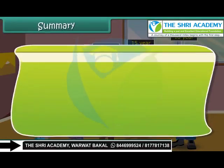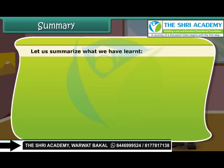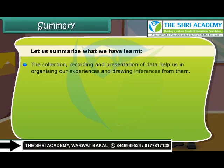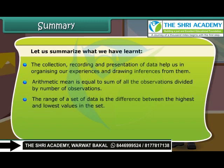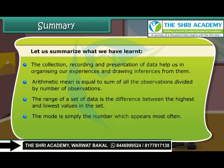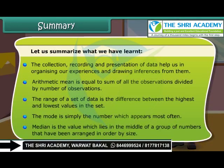Summary. Let us summarize what we have learned. The collection, recording and presentation of data help us in organizing our experiences and drawing inferences from them. Arithmetic mean is equal to the sum of all the observations divided by the number of observations. The range of a set of data is the difference between the highest and lowest values in the set. The mode is simply the number which appears most often. Median is the value which lies in the middle of a group of numbers that have been arranged in order by size.